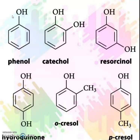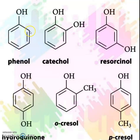You can see here — this is benzene, and one hydrogen of benzene is replaced by OH, then we call it phenol. Now, another hydrogen is also replaced by OH, then we call it catechol.